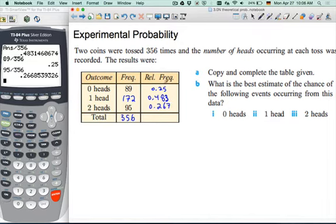Okay, what is the relative frequency always going to add up to? One. Very good. So we copy and complete the table. The second part is a bit funny as a question in a way, but you have to watch out for it because very often on long problems, the answer above folds into the one below. So what's your best estimate of the chance of the following events occurring from this data?